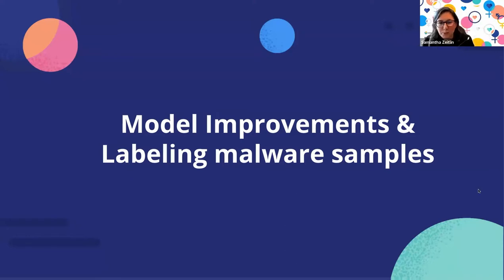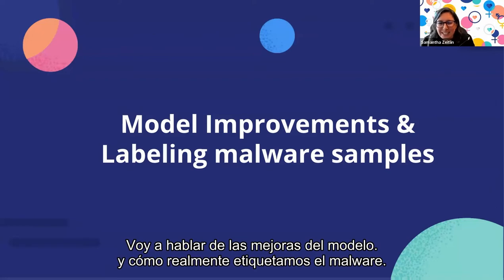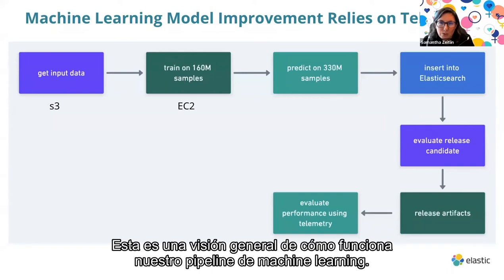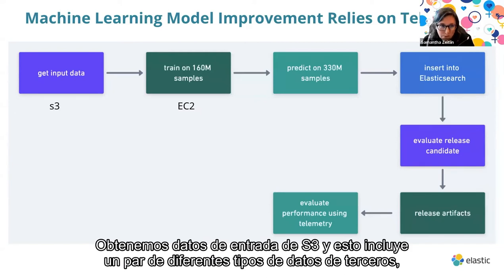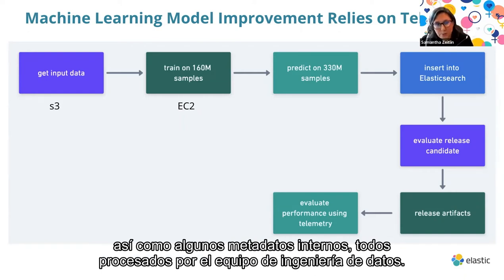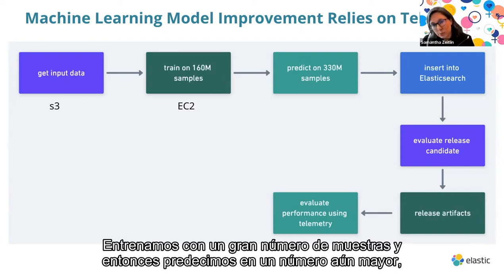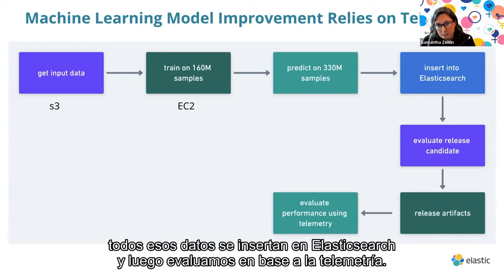I'm going to talk about model improvements and how we actually label malware. To give an overview of how the machine learning pipeline works: we get input data from S3, including different kinds of third-party data as well as internal metadata, all processed by the data engineering team. We train on a large number of samples and then predict on an even larger number. All of that data gets inserted into Elasticsearch, and then we evaluate based on telemetry.